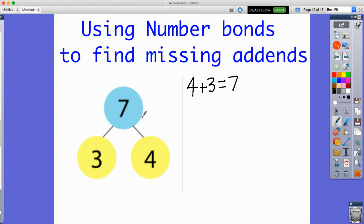So 7 minus 4 is 3. I can also do 7 minus 3 is 4. And then I can also write another addition problem.